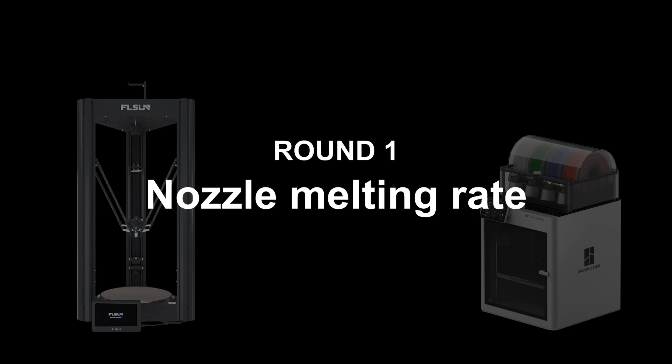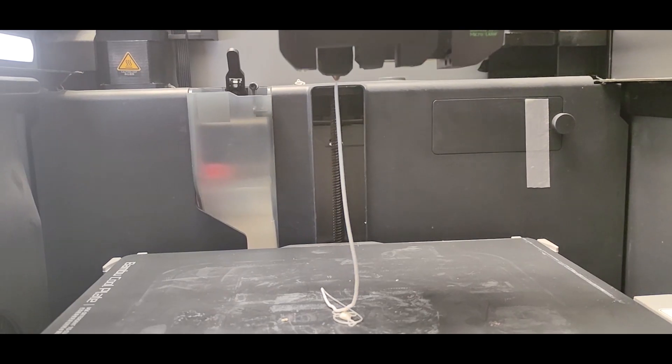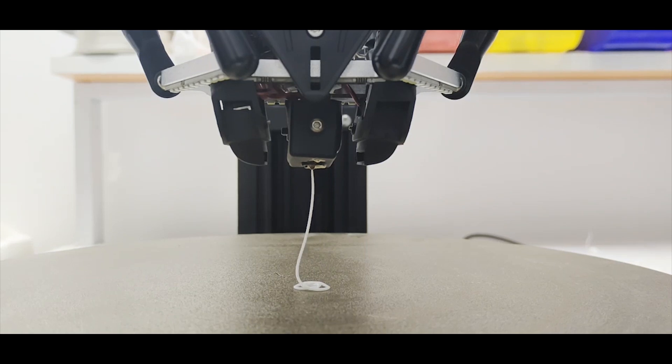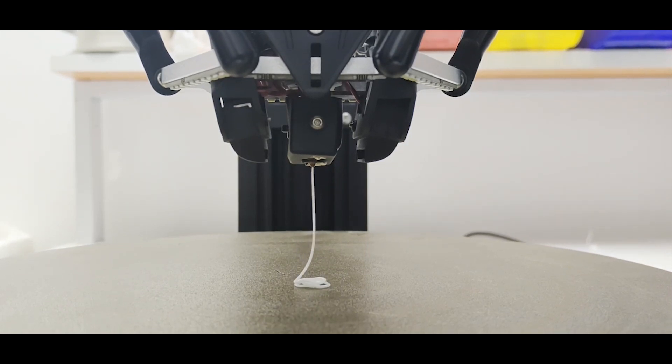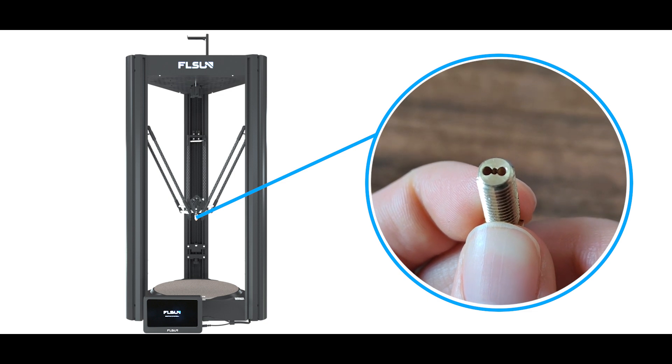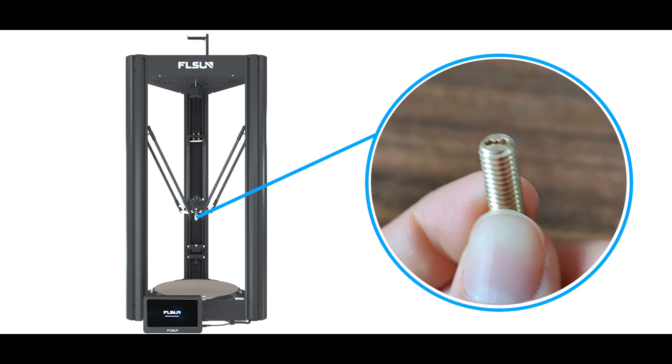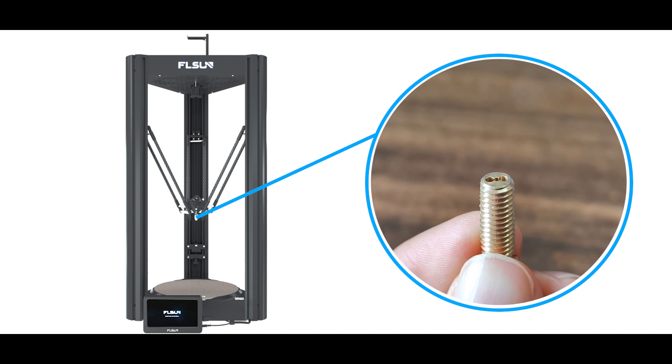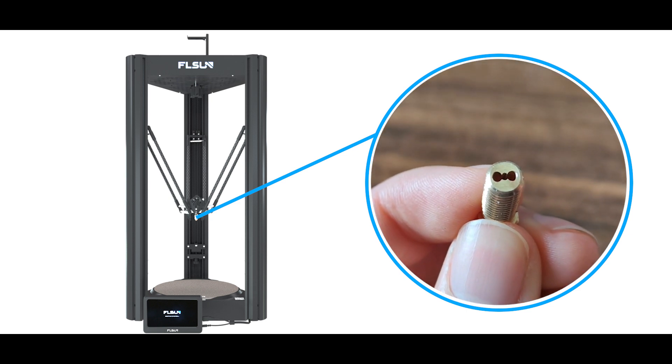First, let's look at the melting rate of both of them. The melting rate is how fast the nozzle melts the filament once it enters the nozzle. The V400 nozzle is a three-hole structure, which can increase the area in which the filament enters through the nozzle, allowing for faster heating and greater flow.